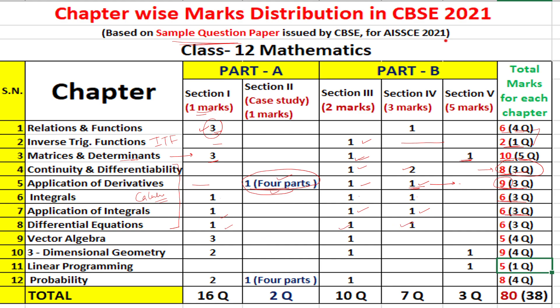For Differential Equations, one question of 1 mark, one question of 2 marks, and one question of 3 marks — three questions for 6 marks. These are the distributions across the Calculus topics. There may be slight interchanges between topics within Calculus.